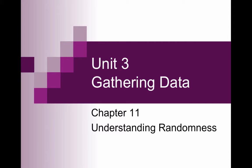We're starting unit 3, which is about gathering data. We're going to be looking at how we can appropriately collect data through surveys and experimentation. But we're going to start with chapter 11, which is understanding randomness.